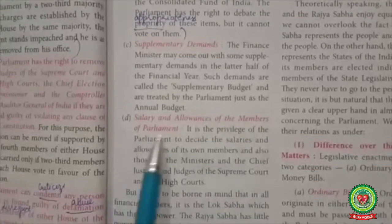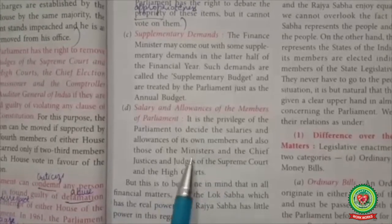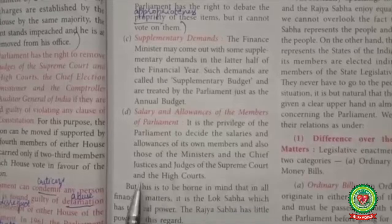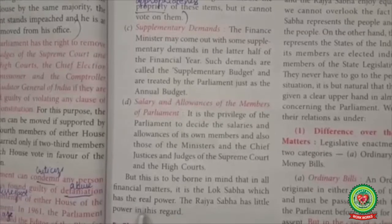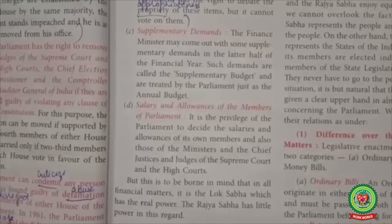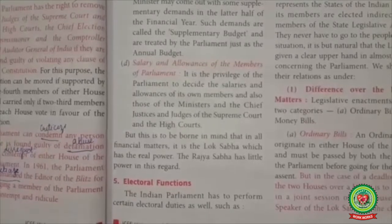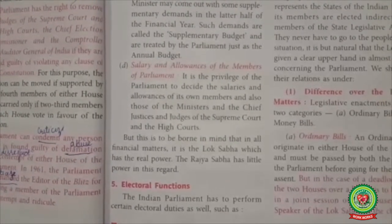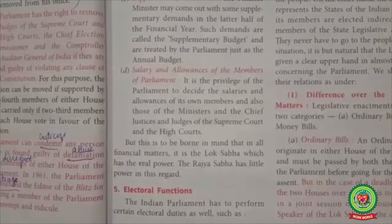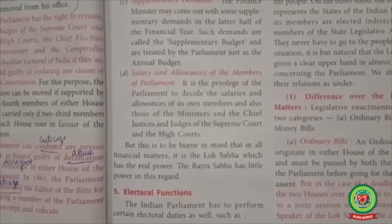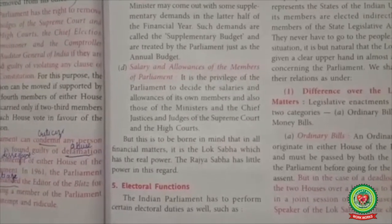Salary and Allowances of Members of Parliament: It is the privilege of Parliament to decide the salaries and allowances of its own members, and also those of the ministers and the Chief Justice and judges of the Supreme Court and High Courts. The Constitution of India provides that members of either house of Parliament shall be entitled to receive such salaries and allowances as may from time to time be determined by Parliament. In all financial matters, it is the Lok Sabha which has the real power; the Rajya Sabha has little power in this regard.